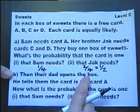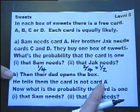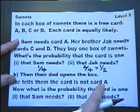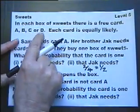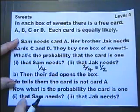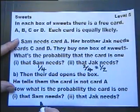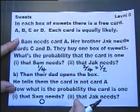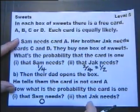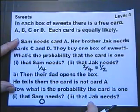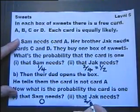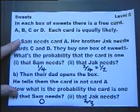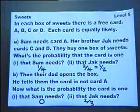The dad opens the box. He tells them the card is not a card A. So he's had a look at it and he said, it's not card A, so it must be B or C or D. Now what's the probability the card is one that Sam needs? Well, the chances are absolutely nil because the card A is the one she wants and it isn't that. But there are three cards left and Jack needs two out of those three, therefore that's the probability the card will be one that Jack needs.